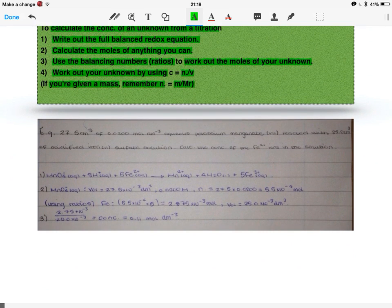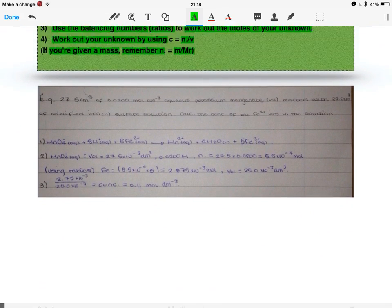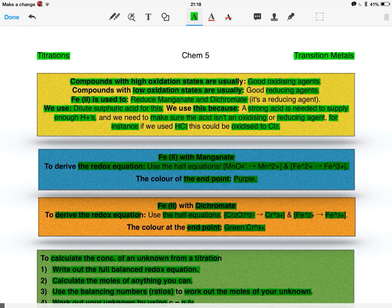And here is an example that I've done myself, and you can just take a look at that, see the steps. Don't look at the answer, see if you can do it yourself. If you can, just check the answer, if you can't, you can see my working. And that's it for the titrations of the transition metals.